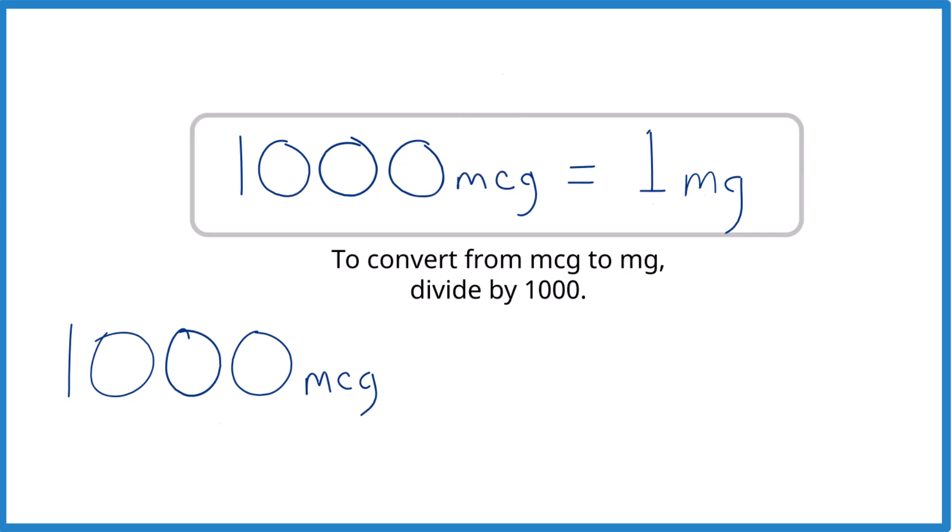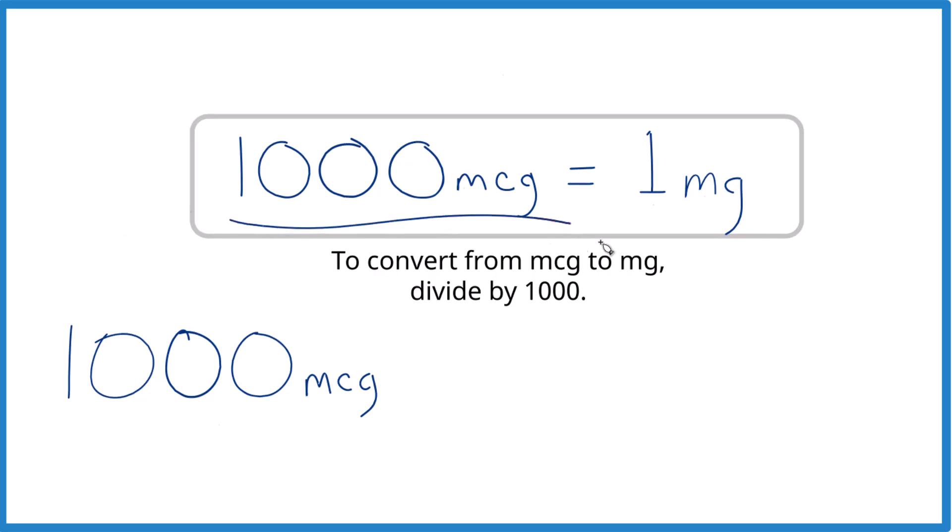To do that, we need to know the conversion factor. The conversion factor is that there are 1,000 micrograms in one milligram. Micrograms are much smaller than milligrams. So typically, when we go from MCG to MG, we just divide by 1,000, and that'll take the micrograms to milligrams.